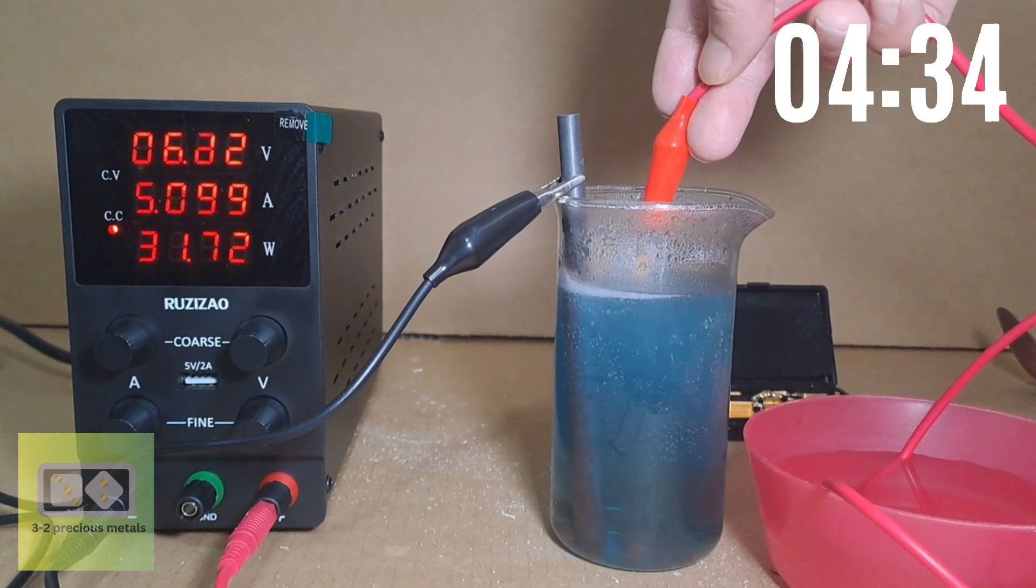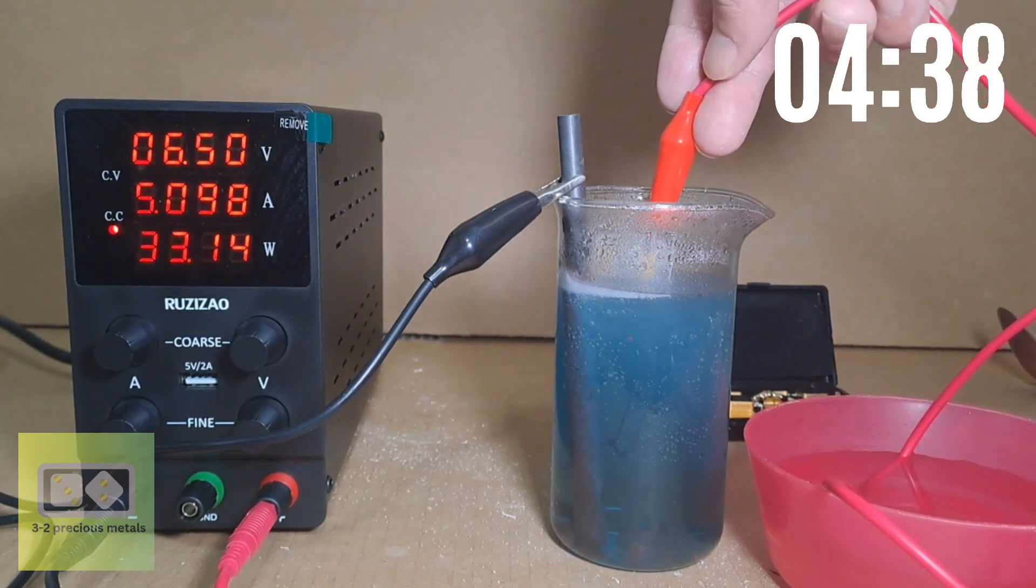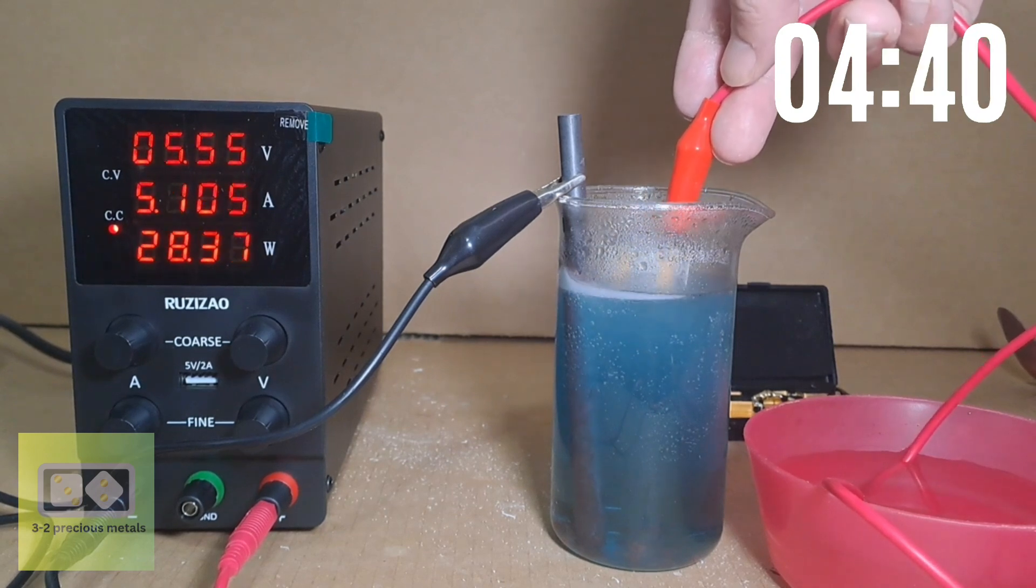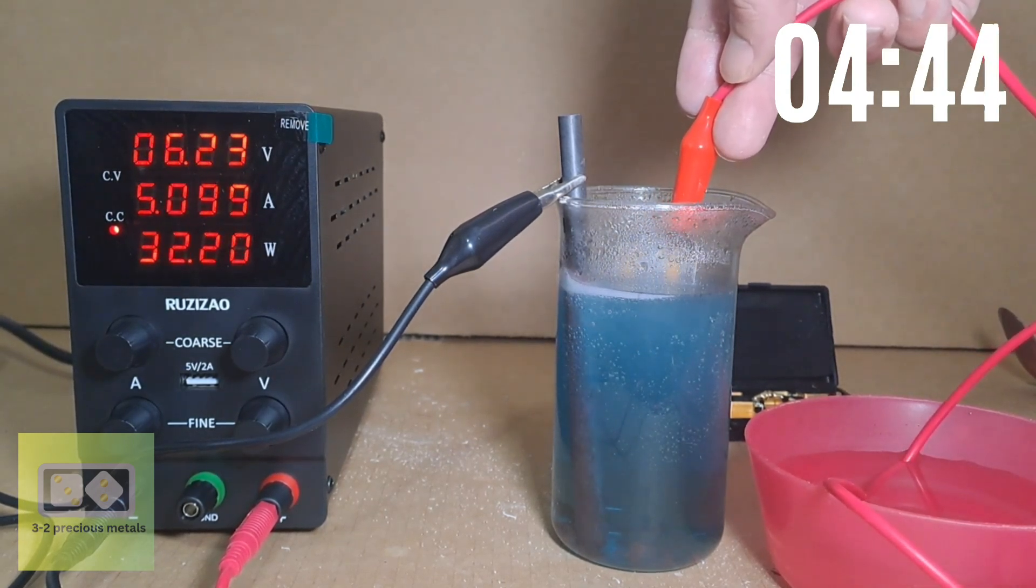When I've seen this process done with concentrated sulfuric acid, I've noticed there is a lot less bubbling. The solution doesn't turn blue and copper doesn't deposit so much at the cathode.